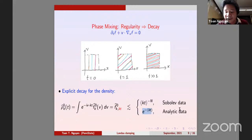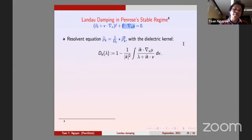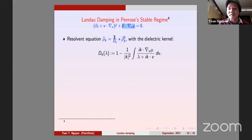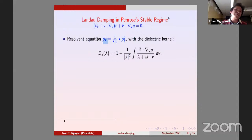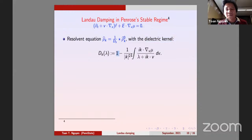That's phase mixing. For Landau damping you add the mean-field term E dv mu, and it's natural to look at the resolvent. The resolvent is explicitly: the density of Vlasov-Poisson equals one over D times the density of the free transport, where D is the dielectric kernel — one minus the ratio between the electric field and the free transport.